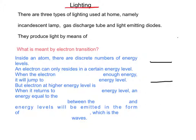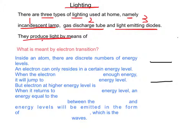Now let's look at lighting. There are three types of lighting used at home: namely, first, incandescent lamps; second, gas discharge tubes; and third, light emitting diodes. They produce light by means of electron transition.